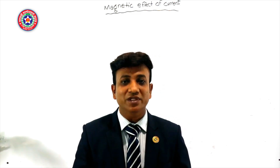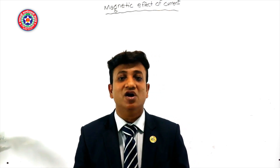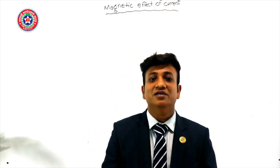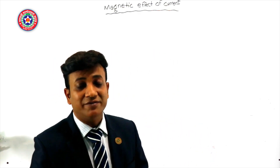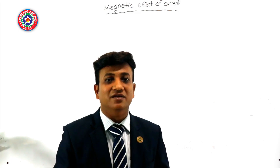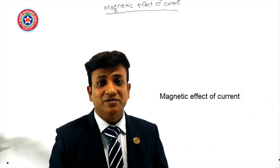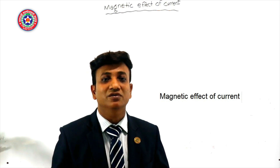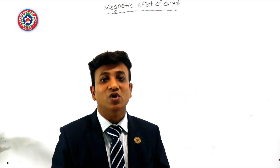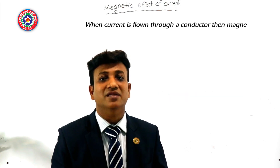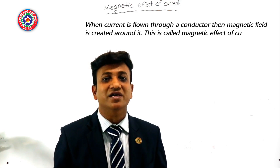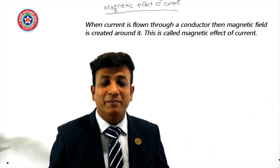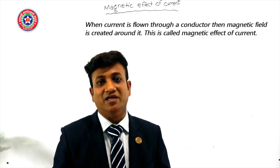Hope you will stay with me up to the end of this video. First of all, you have to know the definition of magnetic field. The definition is: when current is flown through a conductor, then a magnetic field is created around it. This is called the magnetic effect of current.